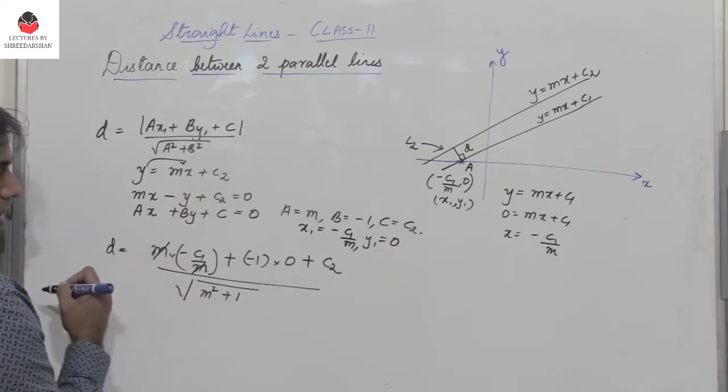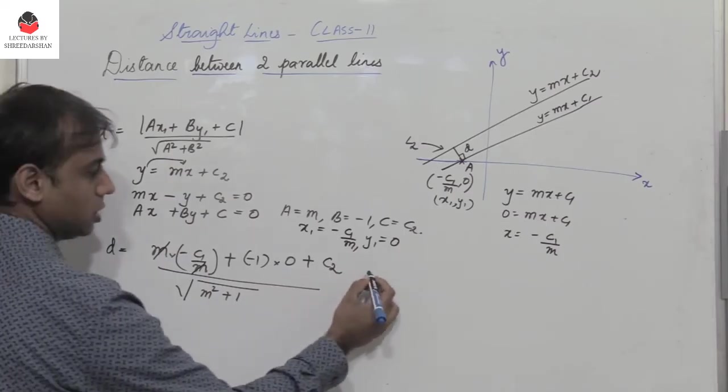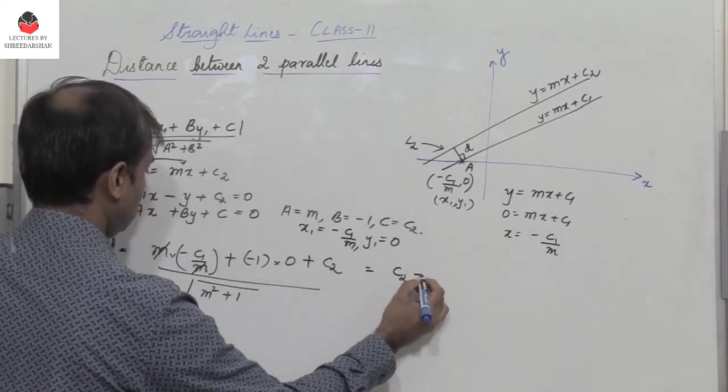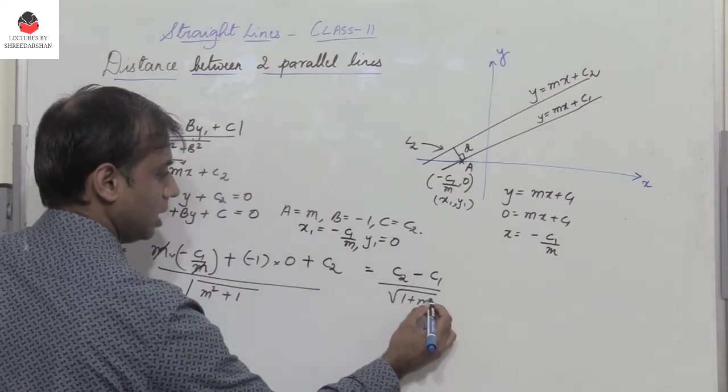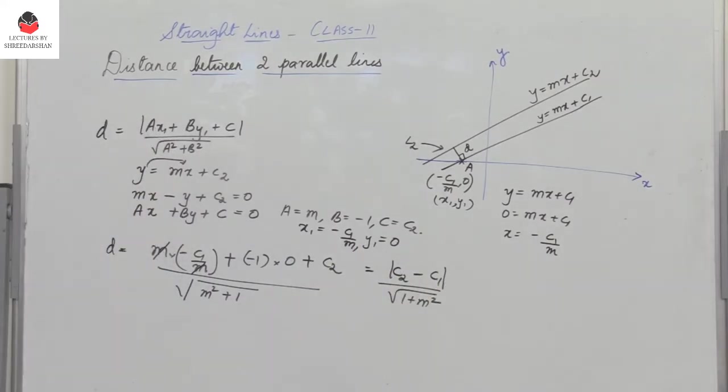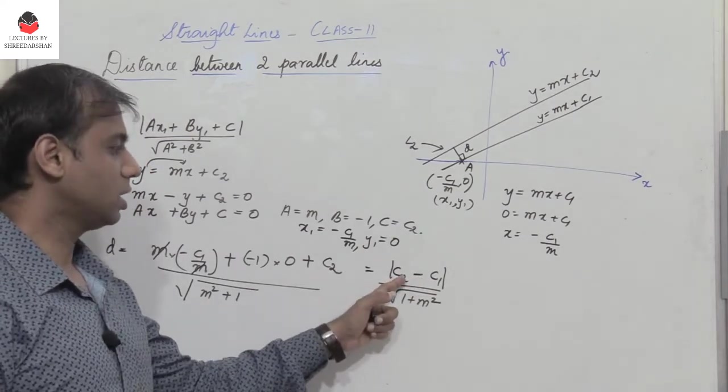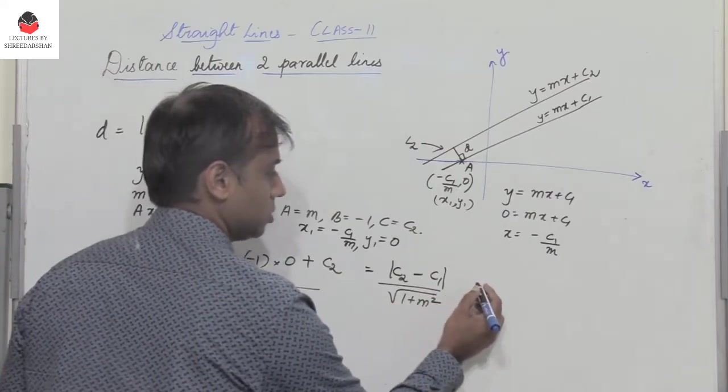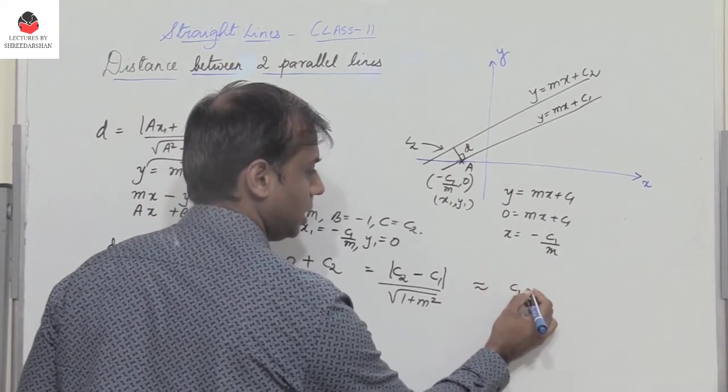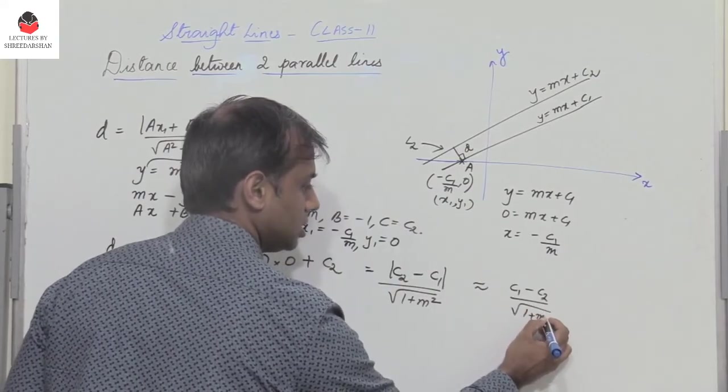Observe m and m gets cancelled. So this is minus c1 and this is c2. So this is nothing but c2 minus c1 divided by root of 1 plus m square magnitude. So either you can consider c2 minus c1, or you can even consider c1 minus c2, because we are only taking the magnitude. So in some textbooks it would also be given as c1 minus c2 divided by root of 1 plus m square.